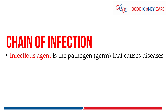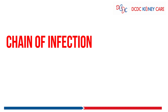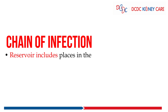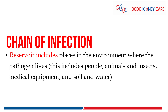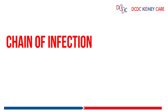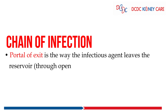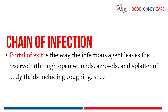Number 1 is the infectious agent — the pathogen or germ that causes disease. Number 2 is the reservoir, which includes places in the environment where the pathogen lives, such as people, animals and insects, medical equipment, soil and water. Number 3 is the portal of exit — the way the infectious agent leaves the reservoir — through open wounds, aerosols and splatter of body fluids including coughing, sneezing and saliva.